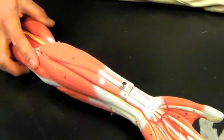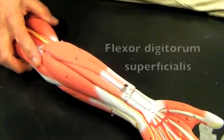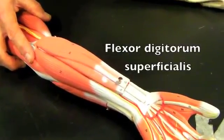One muscle that's deep to the palmaris longus is called the flexor digitorum superficialis. It's this muscle here.